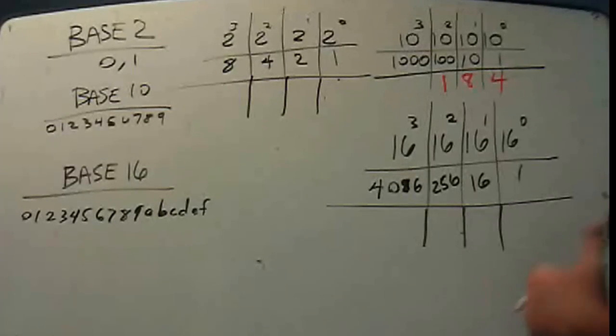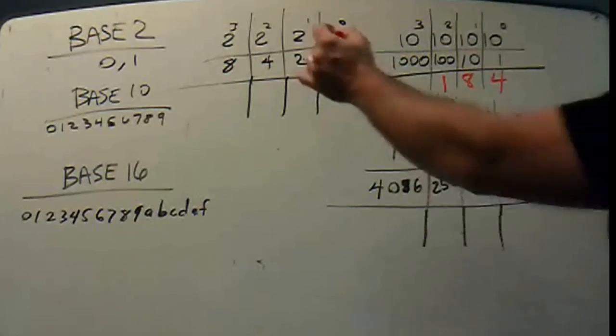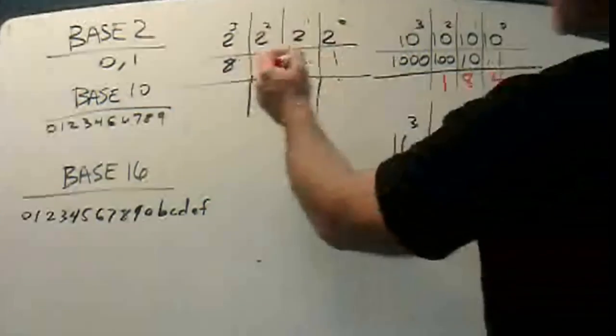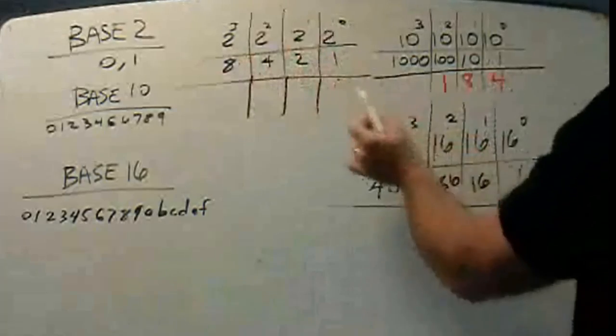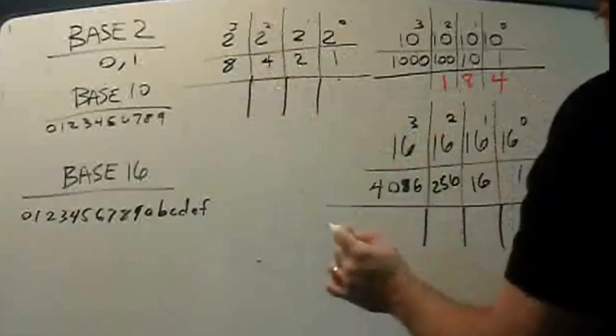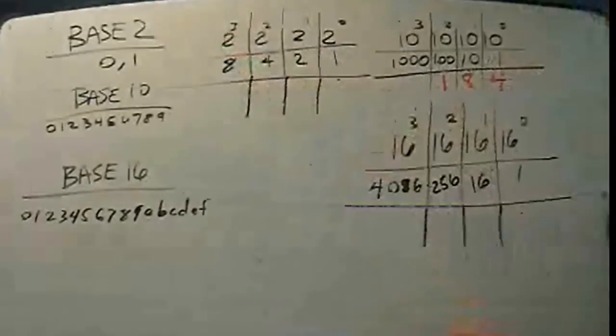But it's actually important if we want to learn other counting systems. So for binary, binary is actually pretty easy. We've got powers of 2, the place values. So here's 2 to the 0 is the 1's place, 2 to the 1 is the 2's place, 2 to the 2 is the 4's place, 2 to the 3 is the 8's place, and so on.